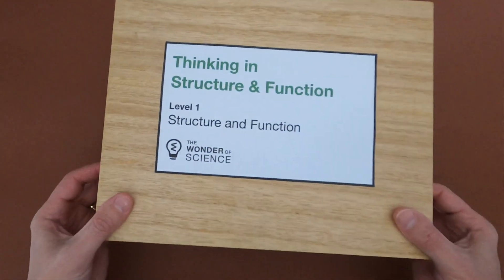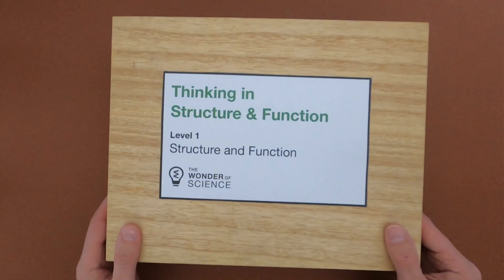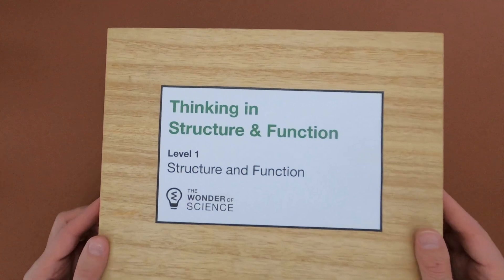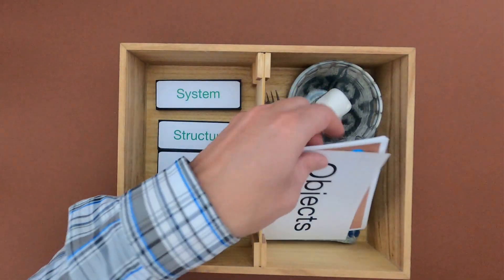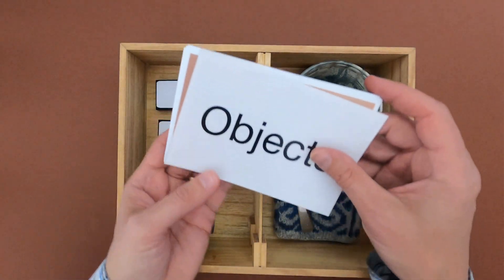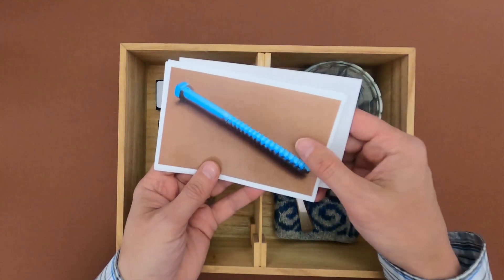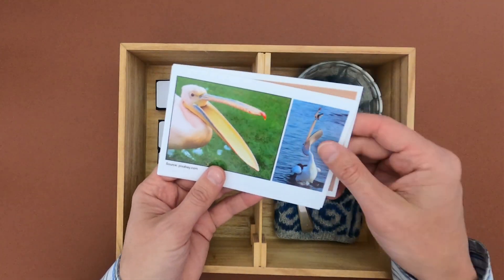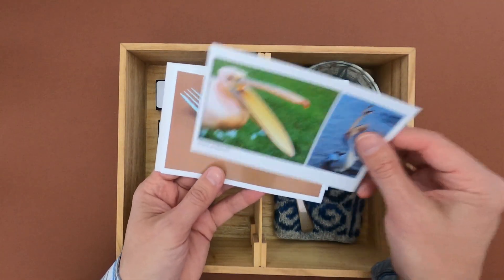Hi, it's Mr. Andersen, and this is Thinking in Structure and Function, Level 1, Structure and Function. After watching this video, you should be able to identify structure and function in objects like this lag bolt, or in living objects like the beak of a pelican.